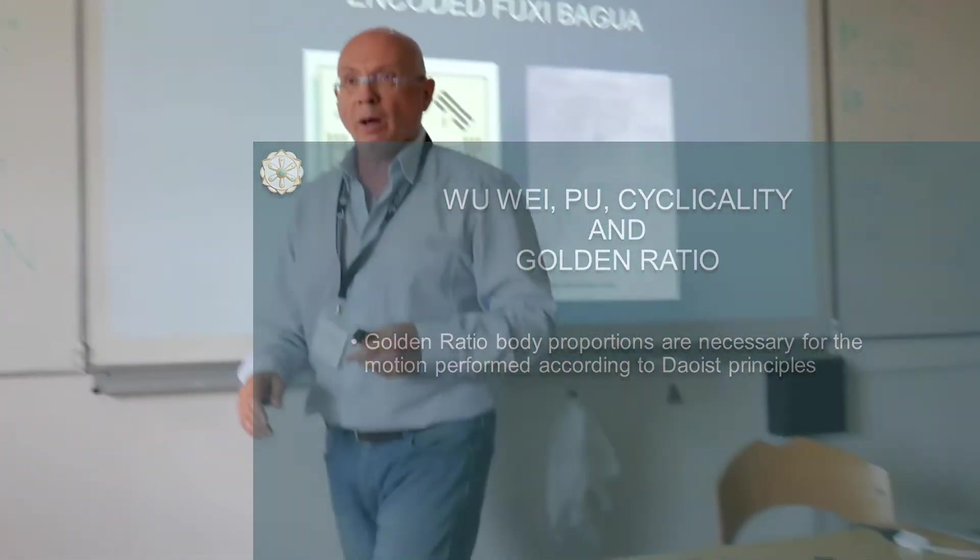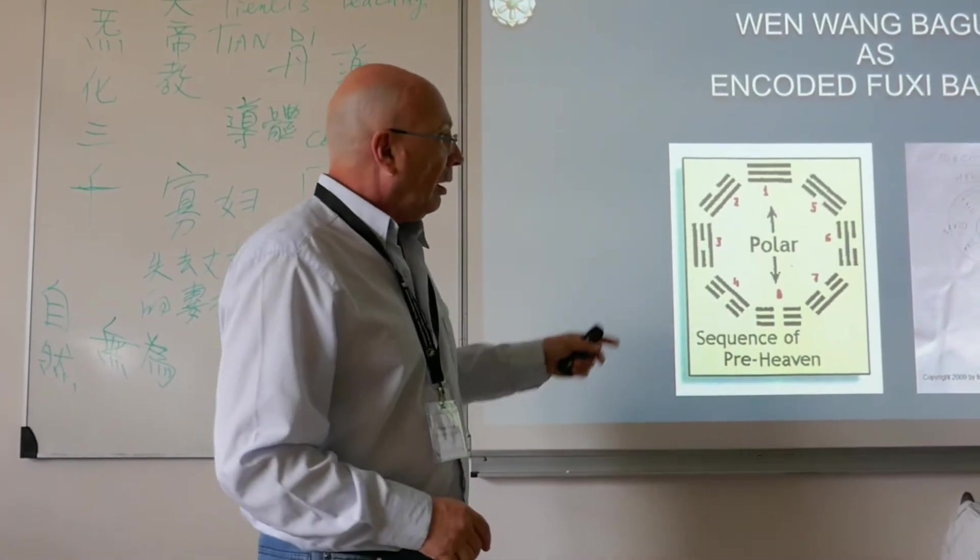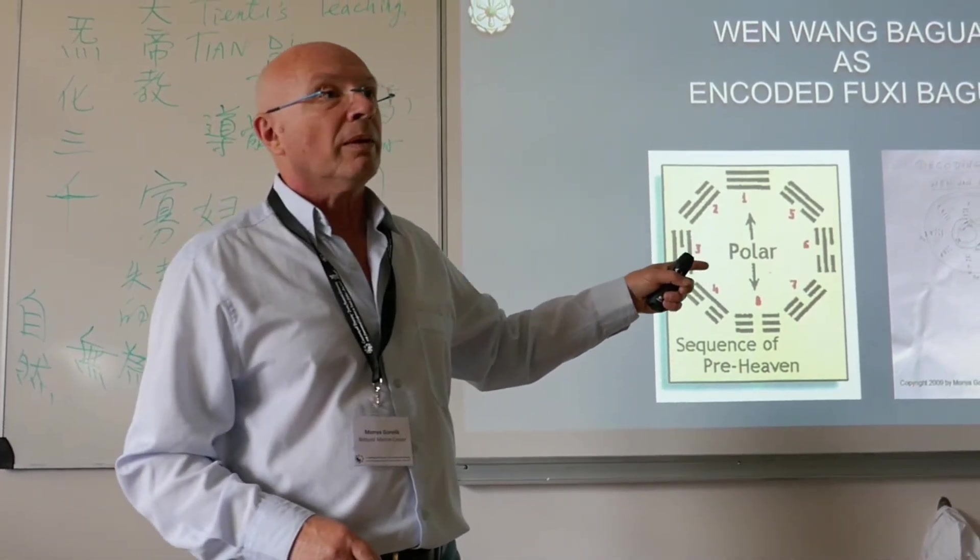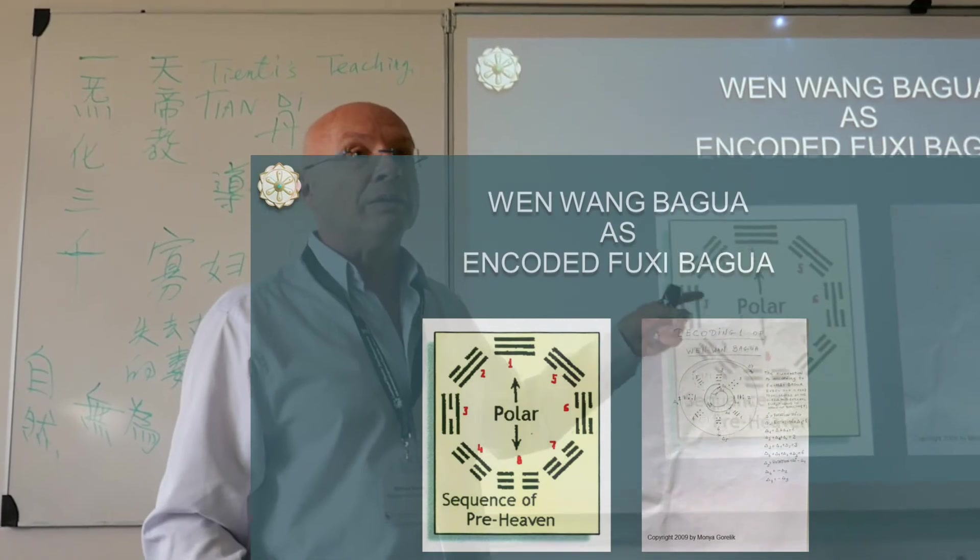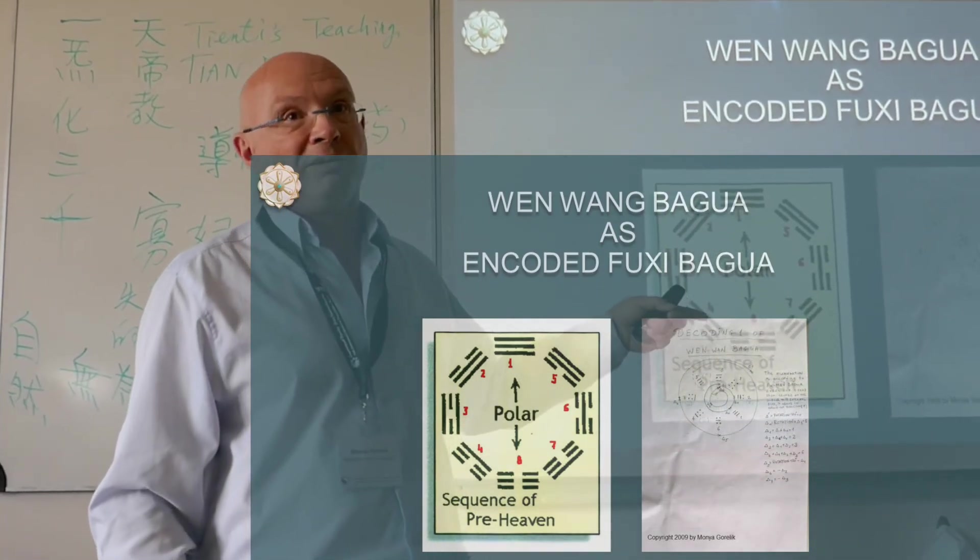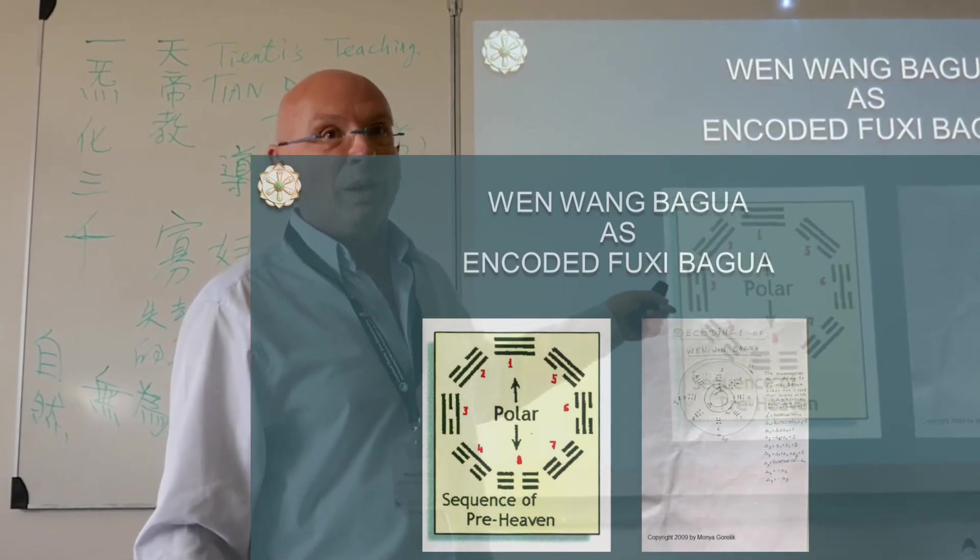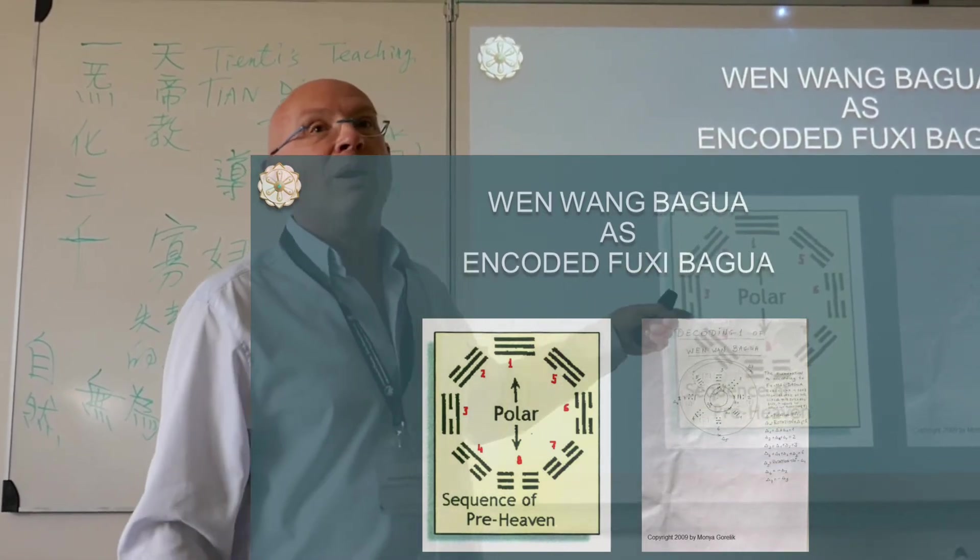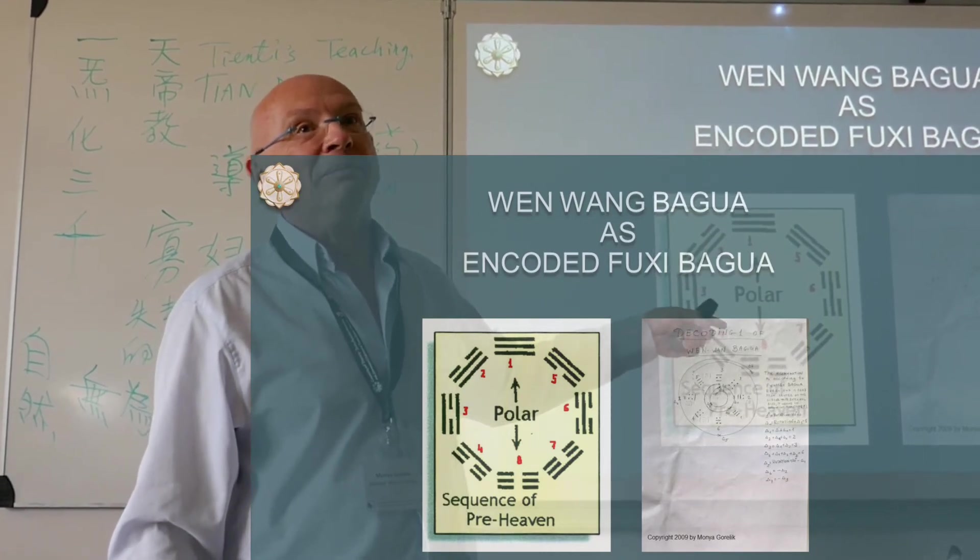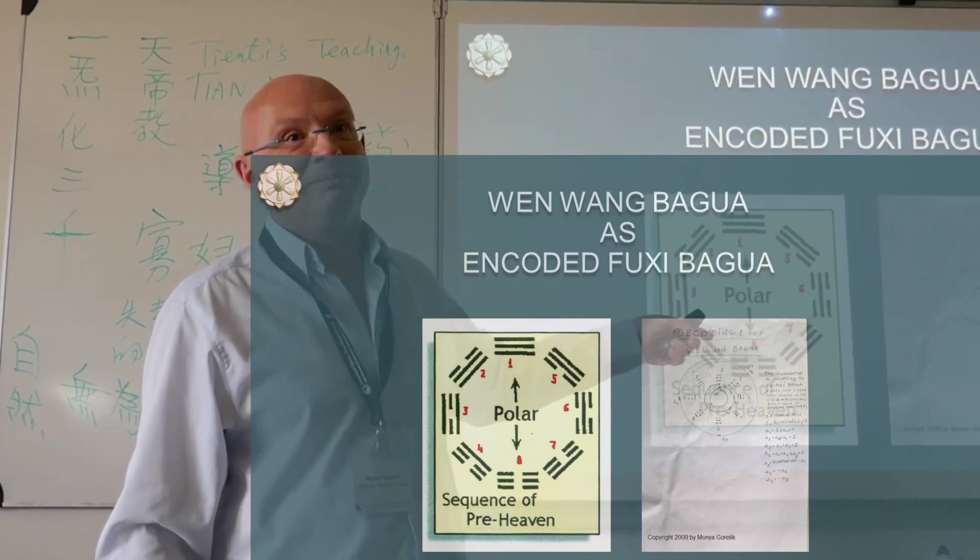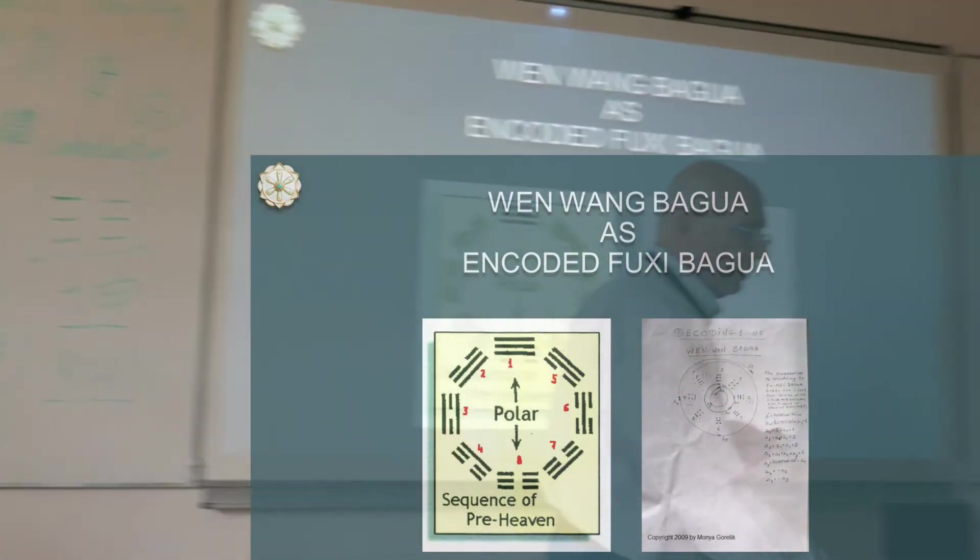I have to say about Wenban Bagua. If Fusi Bagua actually is a code of the nature of motion, Wenban Bagua is the evidence that somebody tried to conceal it, to keep the knowledge in secret. Here, Wenban Bagua is encoded Fusi Bagua. This is a very simple mathematical algorithm how to encode it. It was concealed. I will describe it later.